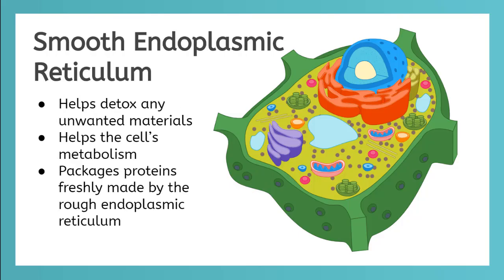There are two types of endoplasmic reticulum. The first one we will talk about is the small yellow one called the smooth endoplasmic reticulum. It is used to metabolize lipids in the cell and help the cell detox from unwanted materials.